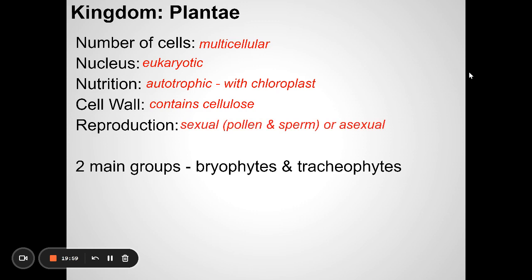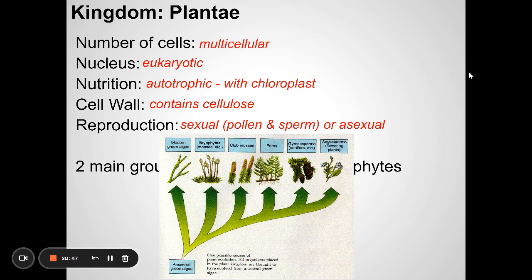Plants reproduce sexually — pollen that you may be allergic to in the spring contains sperm cells. Flowers are actually the reproductive organs of plants, so if you give someone a bouquet of flowers, you're presenting the reproductive organs of a plant. What's a fruit? It's actually a ripened ovary of a plant.